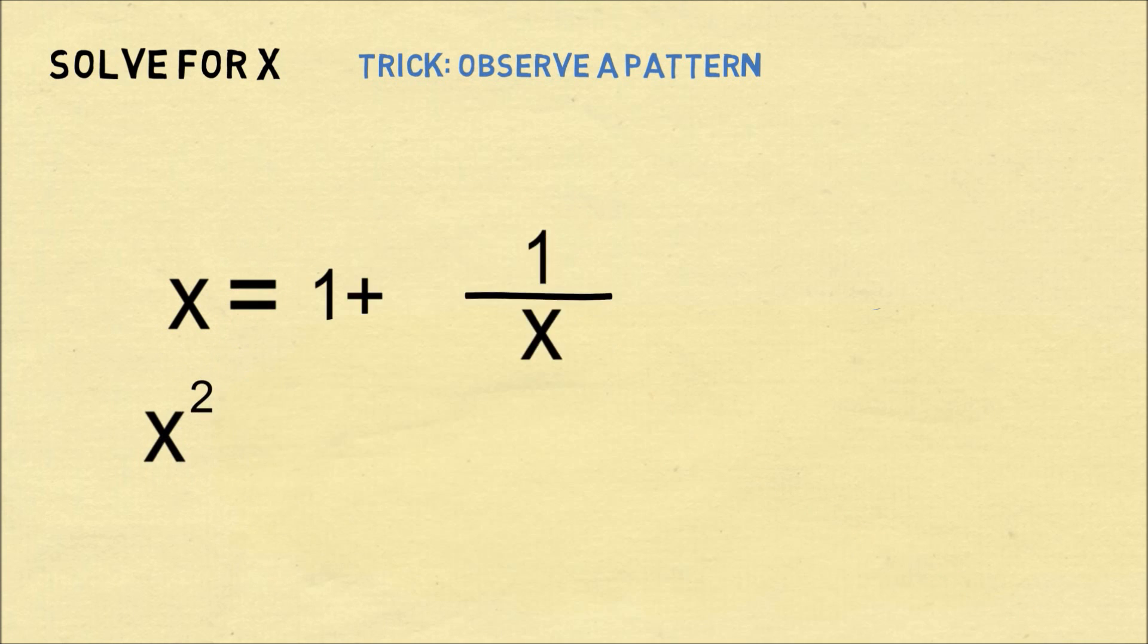If we multiply both sides by x, we get x squared equals x plus 1.